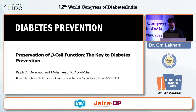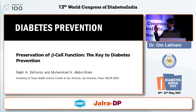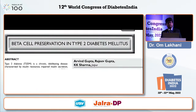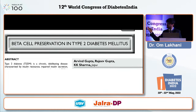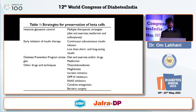Diabetes prevention is another key point. Ralph DeFronzo's article highlights why preservation of beta cell is key to diabetes prevention. Dr. Arvind Gupta also published a nice article in API on beta cell preservation in type 2 diabetes, discussing various strategies: early intensive glycemic treatment, early initiation of insulin therapy, and using certain agents that have the ability to preserve the beta cell, such as metformin or DPP4 inhibitors.